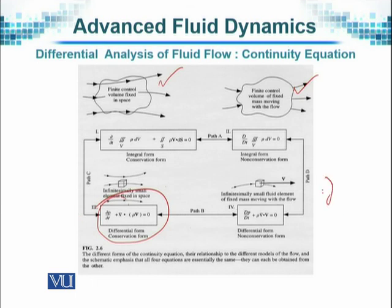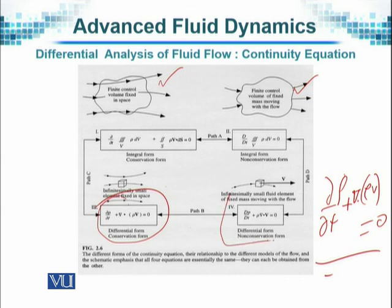The equation is d rho by dt plus divergence of rho v equal to zero. No matter whether you consider the control volume that is fixed in space or it is moving with the fluid flow, you will end up with the same equation. What does it imply? It implies that the mass cannot be created nor destroyed, it has to be maintained.